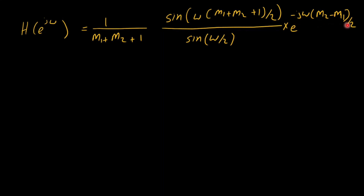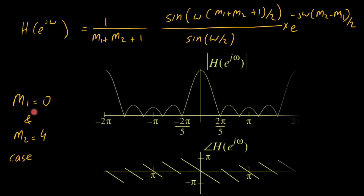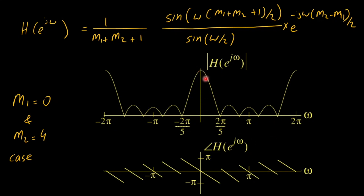For the special case of m1 = 0 and m2 = 4, the moving average filter starts at 0 and runs to 4. We can plot both the magnitude and phase responses. The response is periodic: whatever appears between −π and π repeats from π to 3π. This system behaves as a low-pass filter, smoothing out higher frequencies. Furthermore, the phase response is linear in the range −2π/5 to 2π/5.